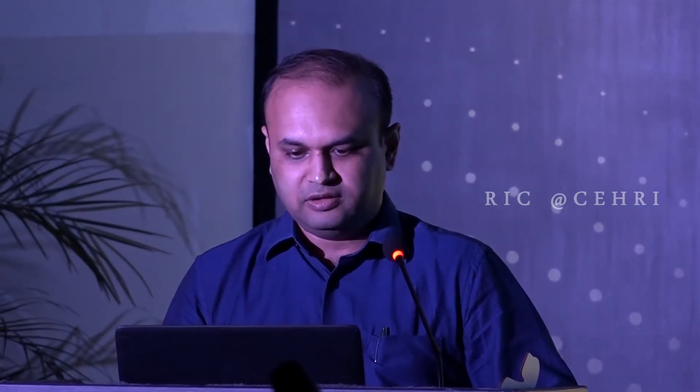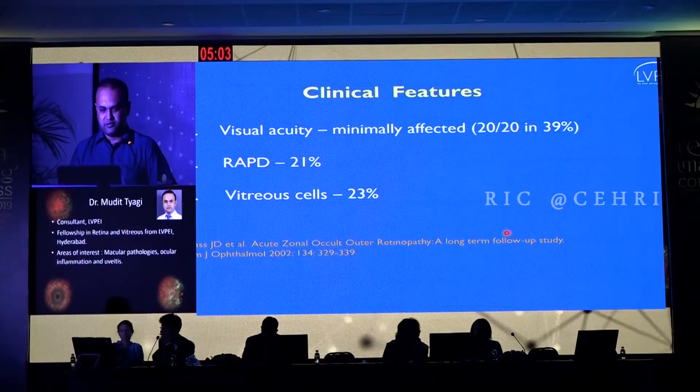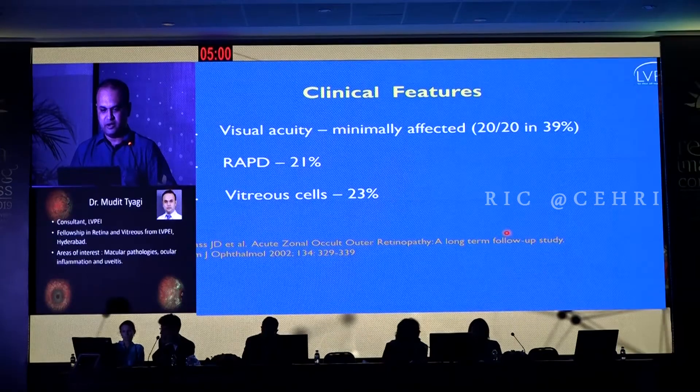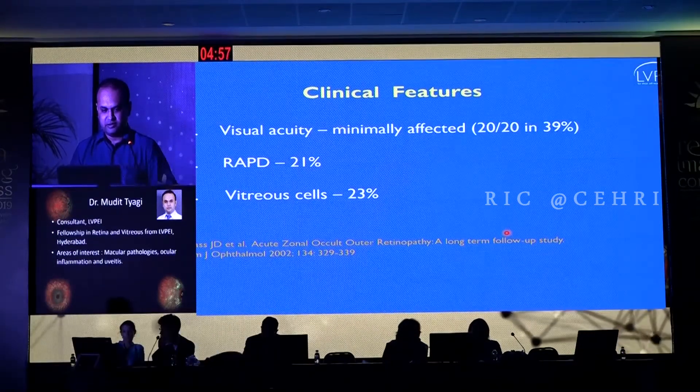Regardless of the pathogenesis, it is a disease which has got an acute onset of visual field defects, whitening of vision, blurred vision, and photopsia in patients. Visual acuity is not that commonly affected — 30 to 40% of patients end up having a visual acuity of 20/20. There is RAPD in 21% of cases and 20% or more of patients can have some vitreous cells.